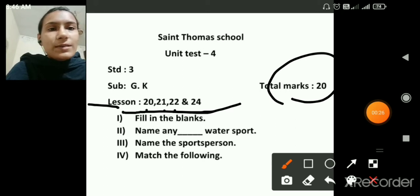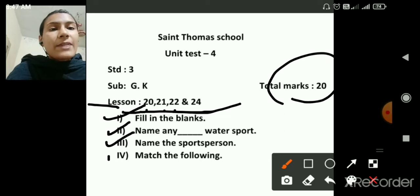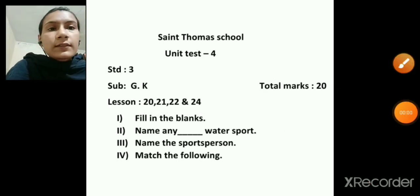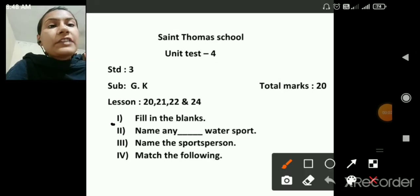So first roman is filling the blanks, then name any water sport, name the sports person and match the following. So let's start the revision from first roman, filling the blanks from lesson number 20.